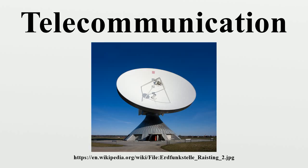Telecommunication over fixed lines is called point-to-point communication because it is between one transmitter and one receiver. Telecommunication through radio broadcasts is called broadcast communication because it is between one powerful transmitter and numerous low-power but sensitive radio receivers. Telecommunications in which multiple transmitters and multiple receivers have been designed to cooperate and share the same physical channel are called multiplex systems. The sharing of physical channels using multiplexing often gives very large reductions in costs. Multiplex systems are laid out in telecommunication networks, and the multiplexed signals are switched at nodes through to the correct destination terminal receiver.